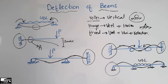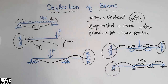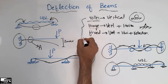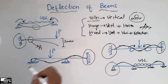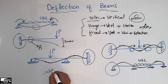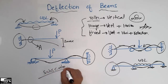I hope you guys understand how to draw the deflected shape of any type of beam with different conditions — whether load conditions or support conditions. You should know the three different support properties: which type of load is resisted by which support. Don't forget to subscribe to my channel for daily Seven Engineering videos. Thank you for watching.